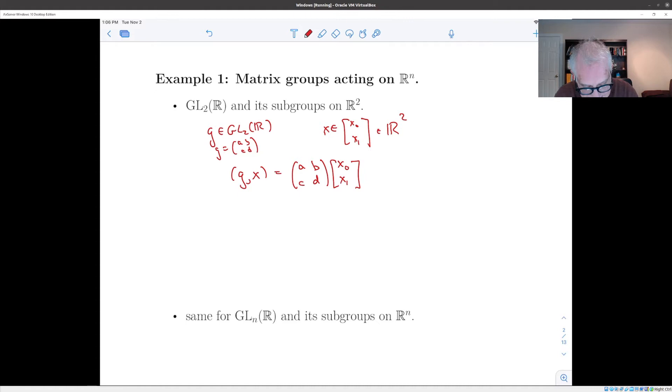Then it's easy to see that this has the properties that you want because the identity matrix just gives you back x_0 and x_1. And if you have two matrices, (a', b', c', d') and (a, b, c, d),